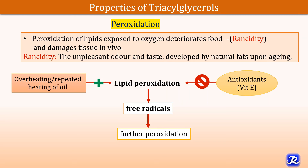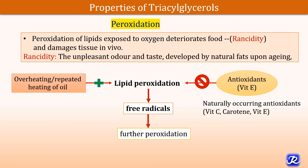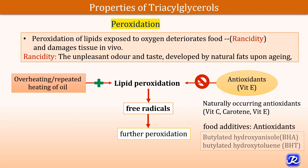Antioxidants like vitamin E prevent lipid peroxidation, and that's why antioxidants like vitamin E are added to vegetable oils. There are certain naturally occurring antioxidants like vitamin E, vitamin C, and carotenoids. Some food additives are also antioxidants, like butylated hydroxyanisole (BHA) and butylated hydroxytoluene (BHT).